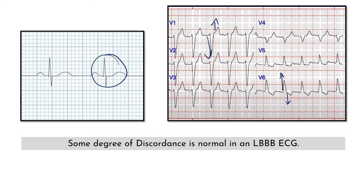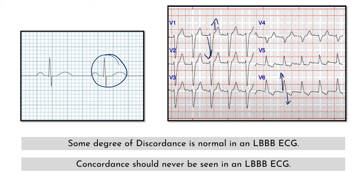Then what is concordance? It is when the ST segment and the QRS are in the same direction. Since you would not expect an abnormal depolarization to be followed by a normal repolarization, you should never see concordance in an uncomplicated LBBB ECG. If you see concordance in an LBBB ECG, it means that there is a second pathological process which is deviating the ST segment in addition to the LBBB — and that is usually acute MI or occlusion. This is the third concept: the concepts underlying concordance and discordance.